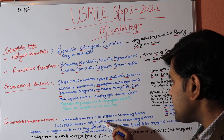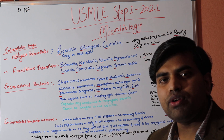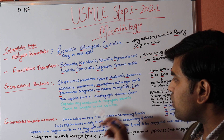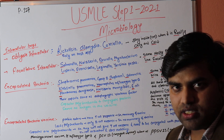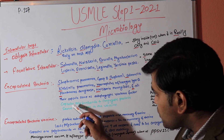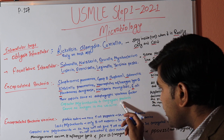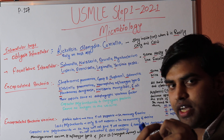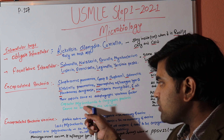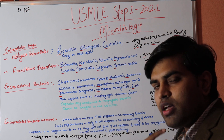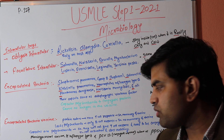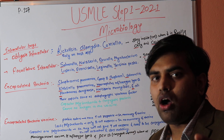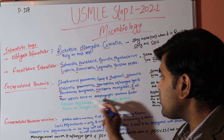Because polysaccharides go directly to B-cells, there is no memory cell formation, so immunity is short-lived. We cannot give polysaccharide alone for lasting protection. Therefore, we conjugate the polysaccharide with a protein. Once conjugated, the body treats it as protein, triggering a T-cell response, memory cell formation, and long-lasting immunity. This is the mechanism behind conjugated vaccines.